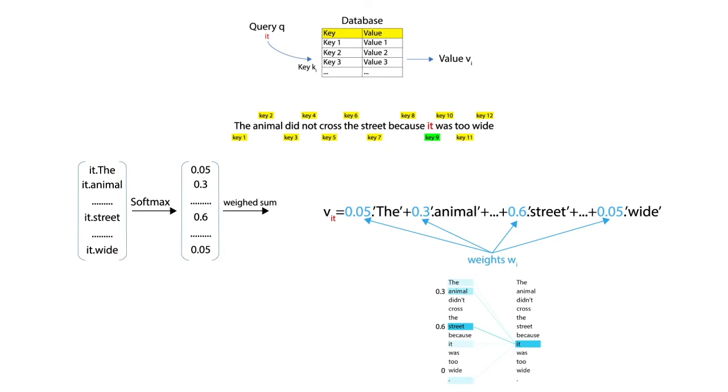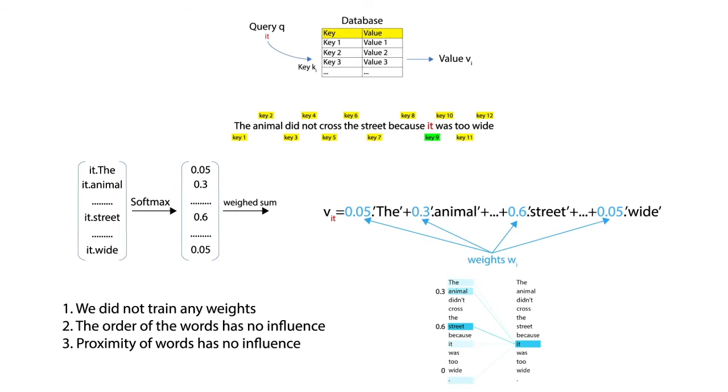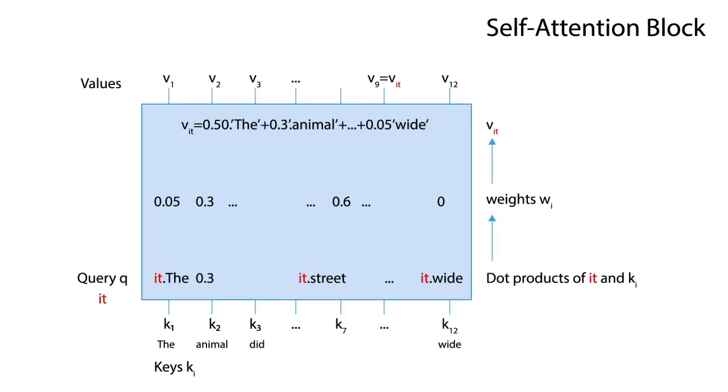We make following observations. We did not train any weights. The order of the words has no influence. Proximity of words has no influence. In a similar way, we can calculate the value V word of every word in a sentence. The end result is what we call a self-attention block.